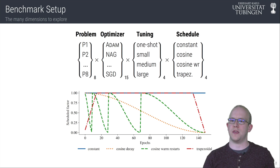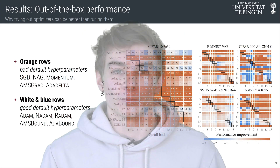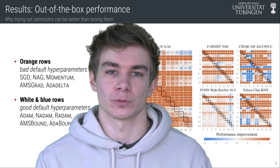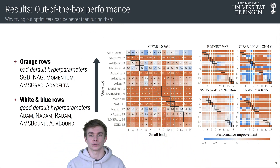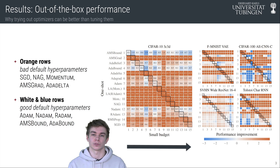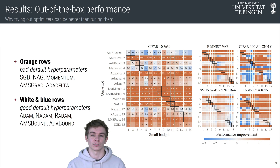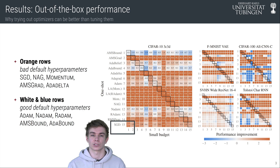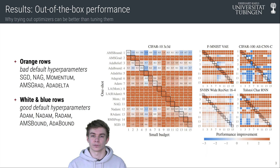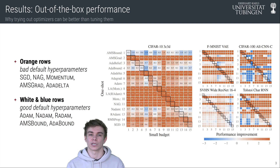We first want to test how well optimizers work out of the box when using their default parameters. For this we compare their untuned one-shot performance on the y-axis with their tuned performance on the x-axis. The large heat map shows the change in performance after tuning for a ConvNet on CIFAR-10, with smaller heat maps showing four other problems. For example, looking at the bottom left cell of the large heat map, going from SGD with its default parameters to a tuned version of AMSBound results in a 2.4% performance increase. An orange row in this figure indicates an optimizer's default setting is performing badly, since it can be beaten by any tuned competitor.